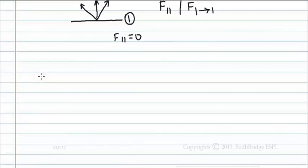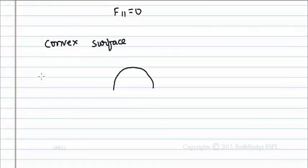If you take a convex surface, that is surface 2, and radiation is taking place from surface 2, then view factor f22 equals 0 since the radiation emitting from surface 2 is not falling on surface 2.